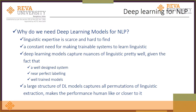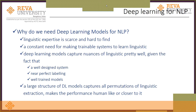Deep learning models capture the nuances of linguistics, such as combinations of various words and their meanings. Three things are needed: first, a well-designed system architecture so the model trains properly; second, accurate data labeling — poor labeling will not produce the required output; and third, good training, which may include reinforcement learning to provide a feedback mechanism and improve the model.